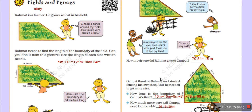This is a small story in which a farmer wants to fence his field. He will take the boundary of his field. He has four sides with measurements of 9, 15, 21, and 9 meters. When he adds all four sides of the field, he gets 54 meters.